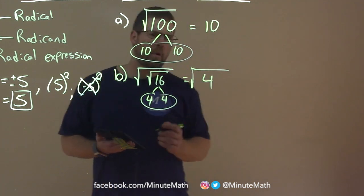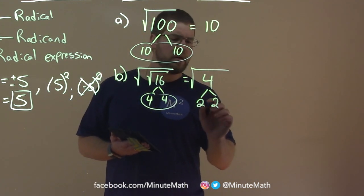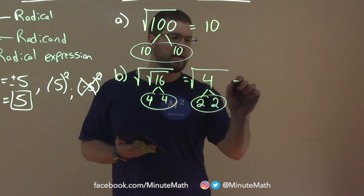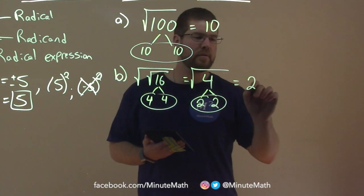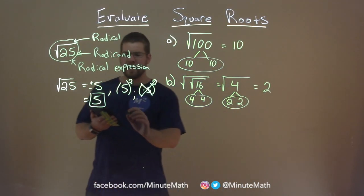Do it again. 4 is, well, 2 times 2. We have a pair again. And so the square root of 4 is 2.